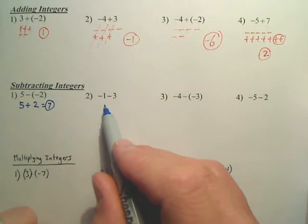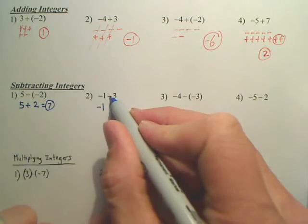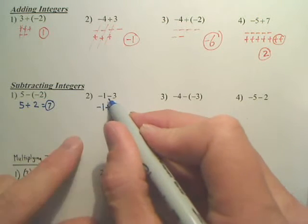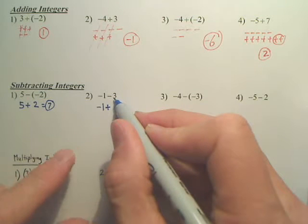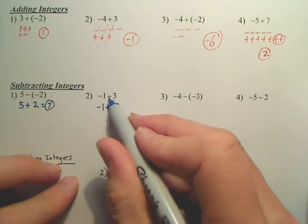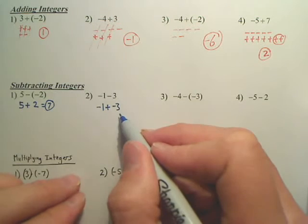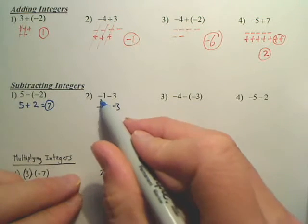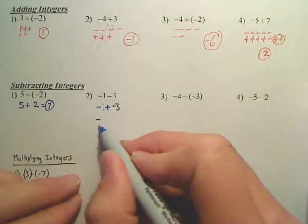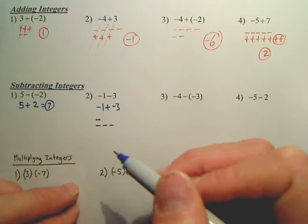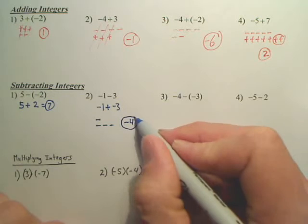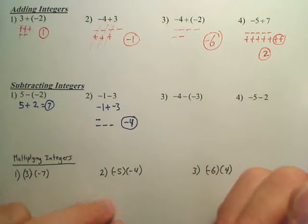How about this one? That's negative one, and we change that minus to a plus, and that three is a positive three, so we're going to change it to a negative three. So looking at that, that minus becomes a plus, and that three becomes a negative three. Basically, that's saying negative one plus negative three. Negative one and negative three — is there conflict? No. You just have four negatives, just chilling.